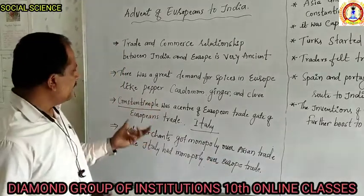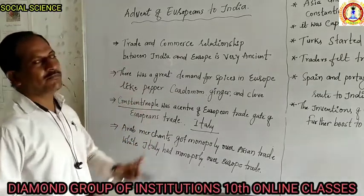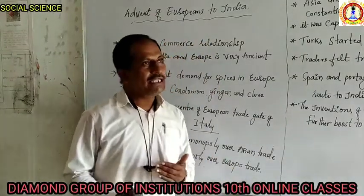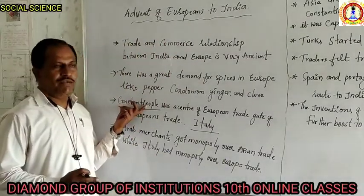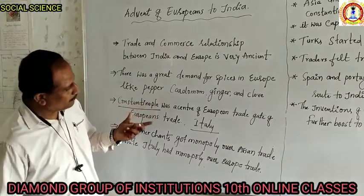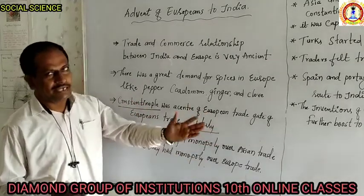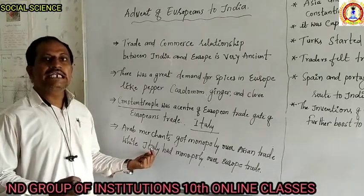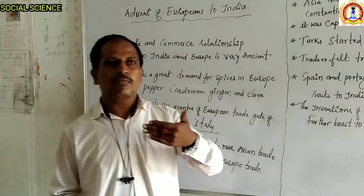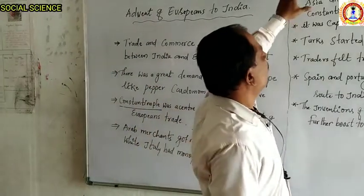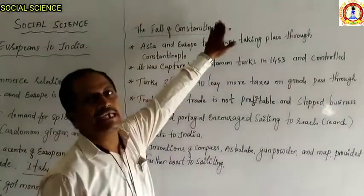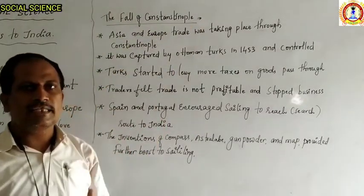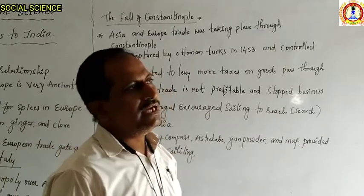The Arab merchants developed Asian trade relations, and Italy maintained a monopoly over European trade. Constantinople was kept as the center place for marketing and developing trade relations. By this way, Constantinople became a famous marketing place for both Europeans and Asians — both Arab merchants and Italian merchants. But due to some problems, the fall of Constantinople arose.